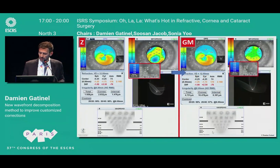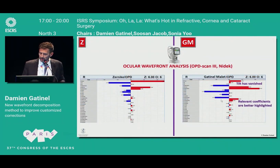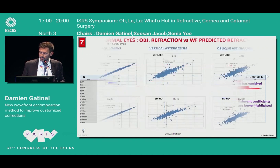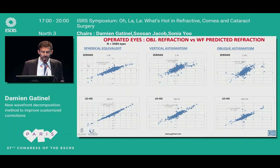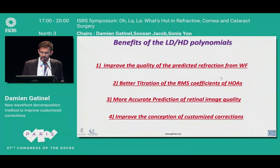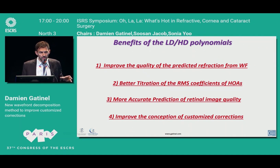For keratoconus we have the same issues that can be resolved with this new classification, showing more clearly the true relevance of higher-order modes, and a better correlation between the low-order refraction in the LDHD mode. In conclusion, with this classification you can improve the quality and prediction from wavefront analysis, which will be important if you want to conceive better customized corrections. Thank you very much.